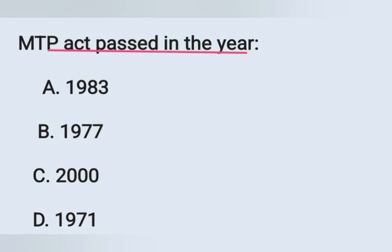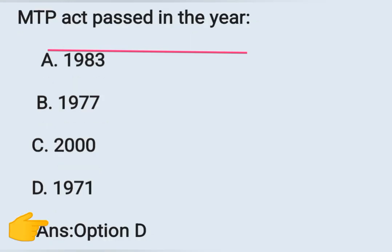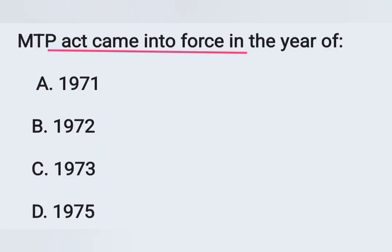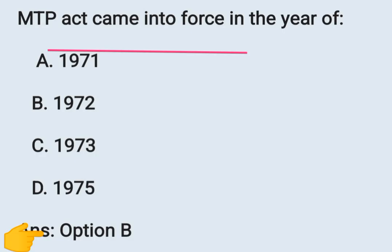Next question: The MTP Act was passed in the year — Option A: 1983, Option B: 1977, Option C: 2000, Option D: 1971. MTP stands for Medical Termination of Pregnancy Act, which was passed in the year 1971. Option D is the correct answer. The next question: The MTP Act came into force in the year — Option A: 1971, Option B: 1972, Option C: 1973, Option D: 1975. The correct answer is 1972, Option B.